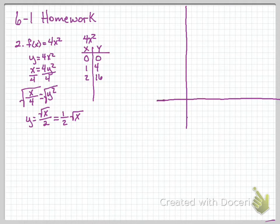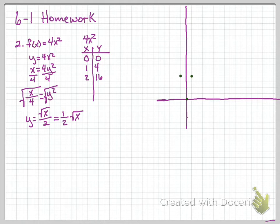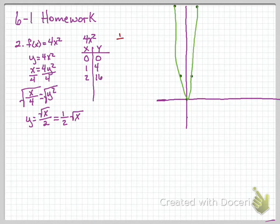Okay, there we go. So our points are 0,0, then 1,4 and negative 1,4, and then 2,16 and negative 2,16. I don't have the negative side on the t-chart, but the y-axis is our line of symmetry, so it's the same on both sides — I can reflect it across. Now let's work on the one-half square root of x. Remember, we're just reversing the x and y numbers.